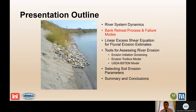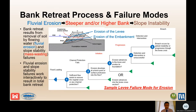We're now going to look at bank retreat processes and failure modes. Bank retreat results from an interactive process of removal of soil by flowing water — fluvial erosion — and slope stability failures, or mass wasting. This is interactive: fluvial erosion leads to steeper and/or higher banks, which induces a slope stability failure.